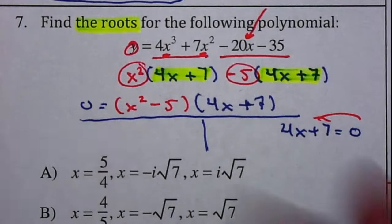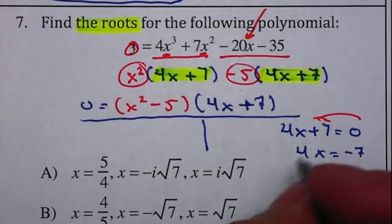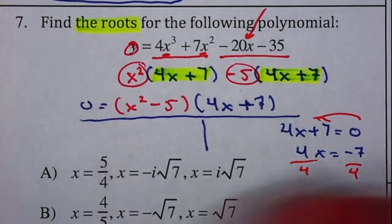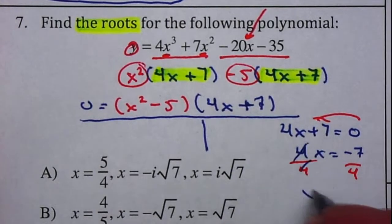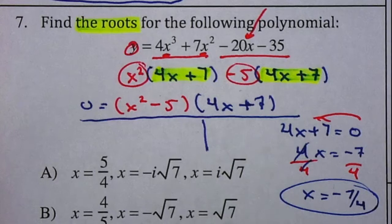Move the 7 to the right, becomes negative. Divide by 4. So, therefore, x is equal to negative 7 over 4.